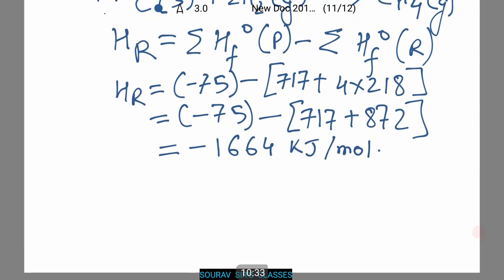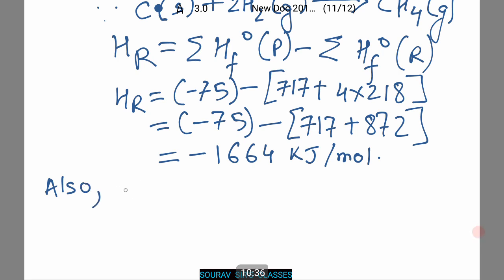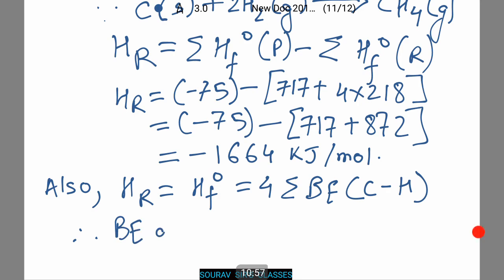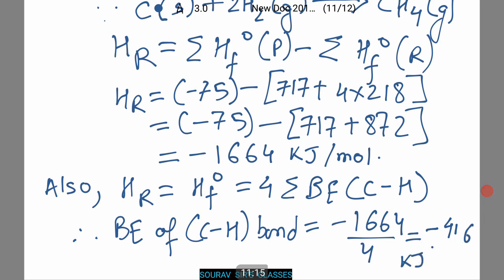Now also we see that HR equals HF degrees, which equals 4 times summation BE carbon-hydrogen bond. Therefore bond energy BE of carbon-hydrogen bond equals minus 1664 by 4, which equals minus 416 kilojoules per mole.